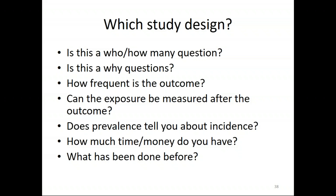Another complication is changes in diagnostic criteria over time — like autism, where improved screening makes it look like incidence is skyrocketing when it was really always there. This creates diagnostic bias and confounding by time, making studies from 10, 20, or 40 years ago potentially not comparable to what we're studying now. This is certainly not a comprehensive list of things to think about.